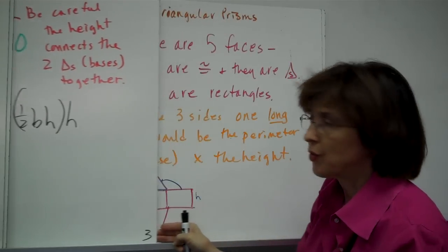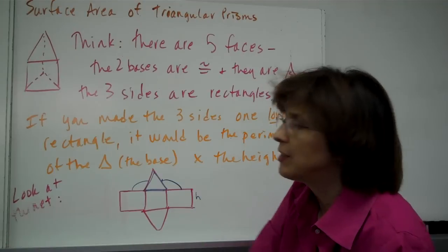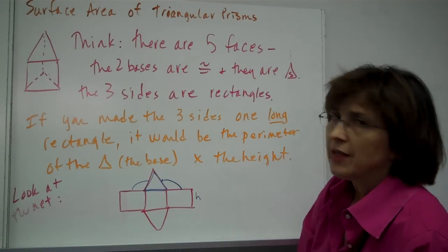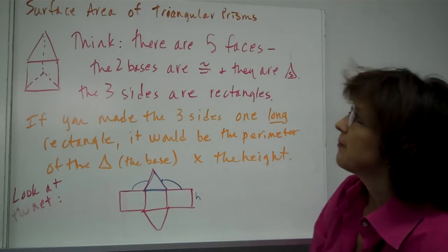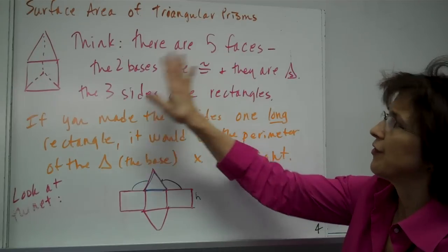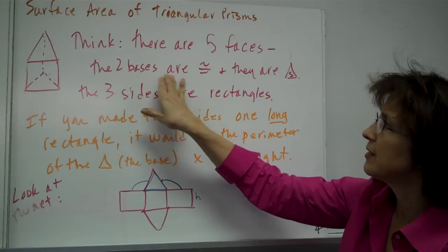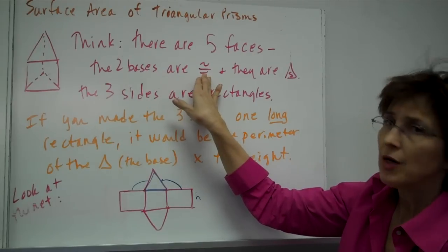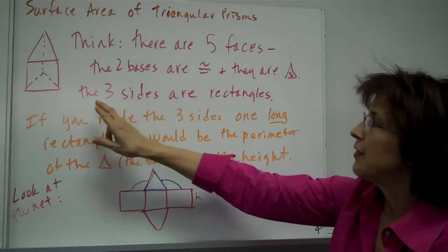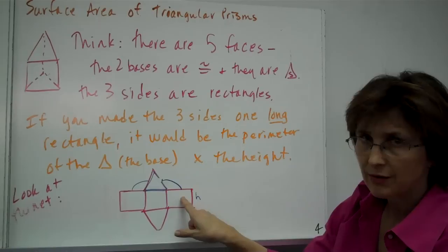We'll take two days to work through all the volume and surface area of triangular prisms. Now we're going to hit surface area. For the surface area of a triangular prism, think about this: there are five faces. For the net of a triangular prism, there are five faces — two bases, and the two bases are congruent, and they're the two triangles. Then the three sides are all rectangles. In the net you can see the two triangles and three rectangles.